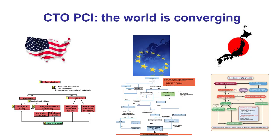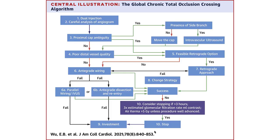There has been a lot of convergence between different parts of the world and different operators, summarized in a global CTO crossing algorithm published in JACC in 2021. This algorithm builds upon the previous algorithms and breaks down CTO crossing into 10 steps, which we will discuss one by one.